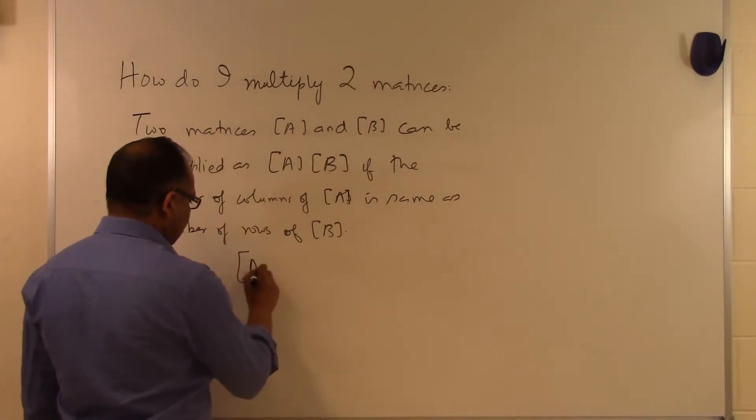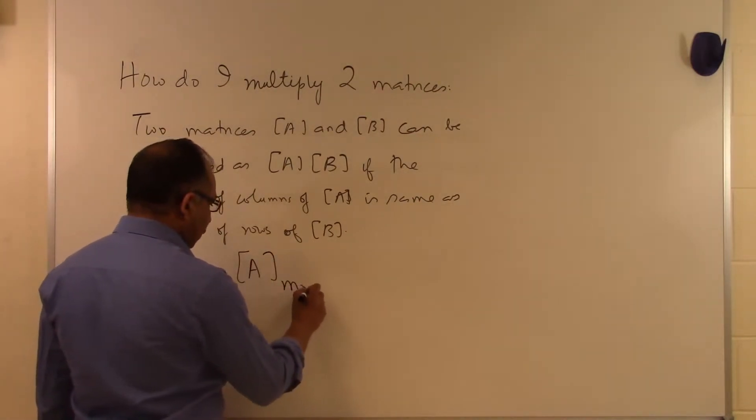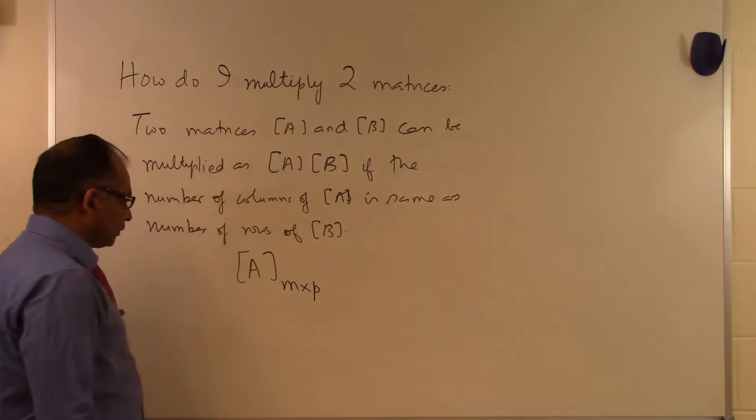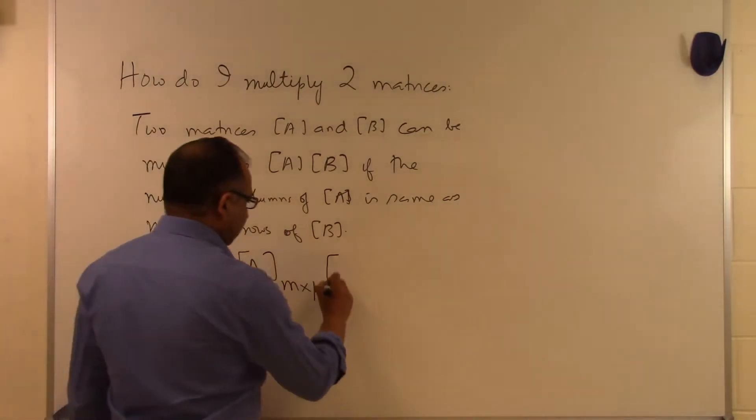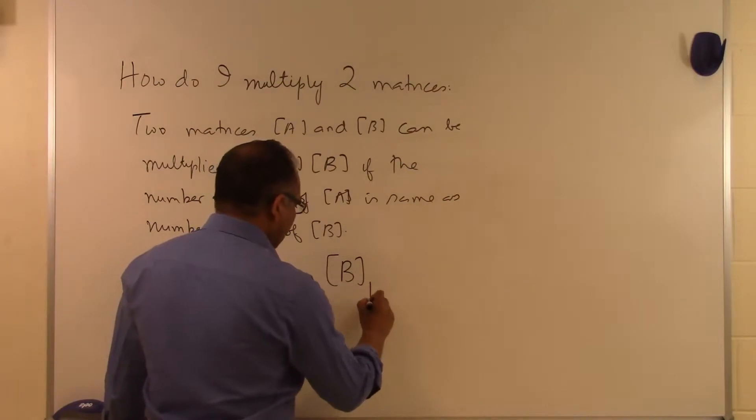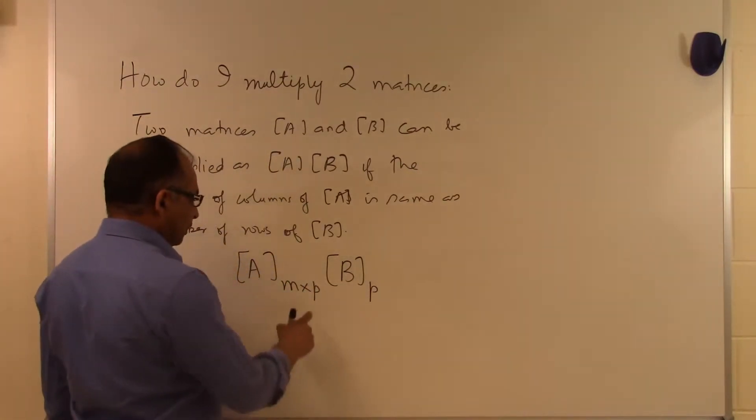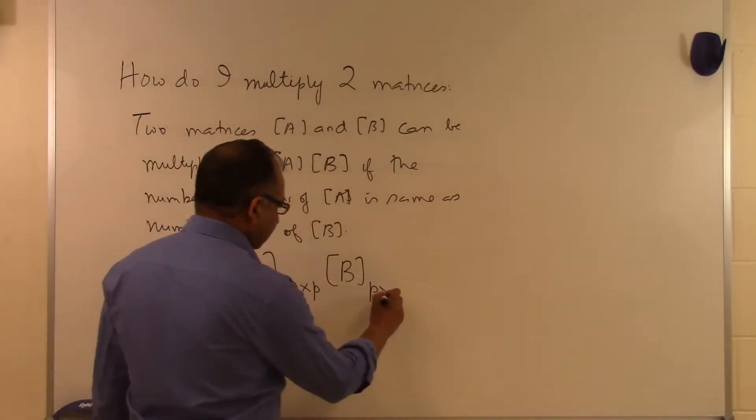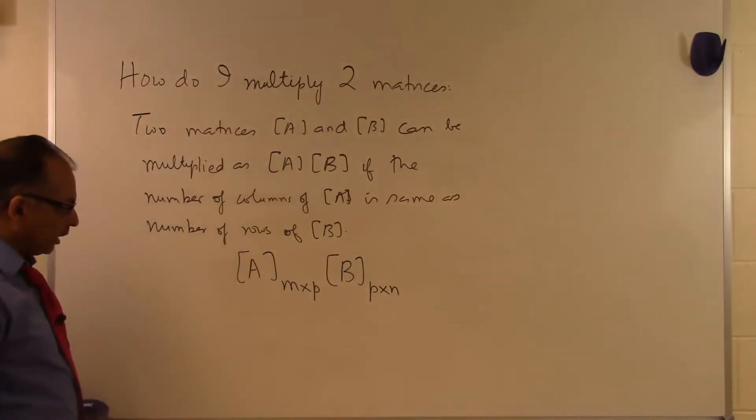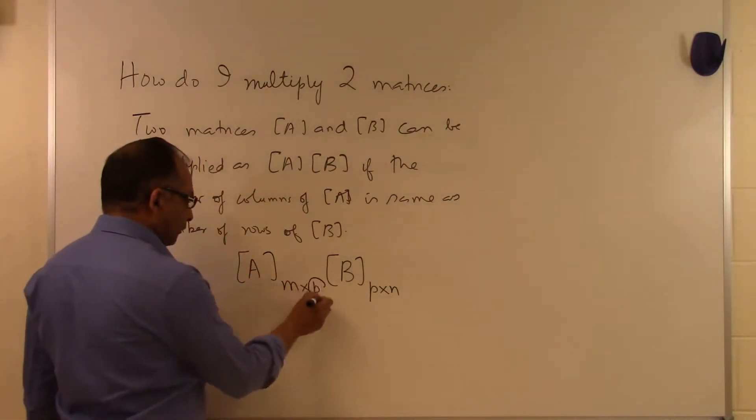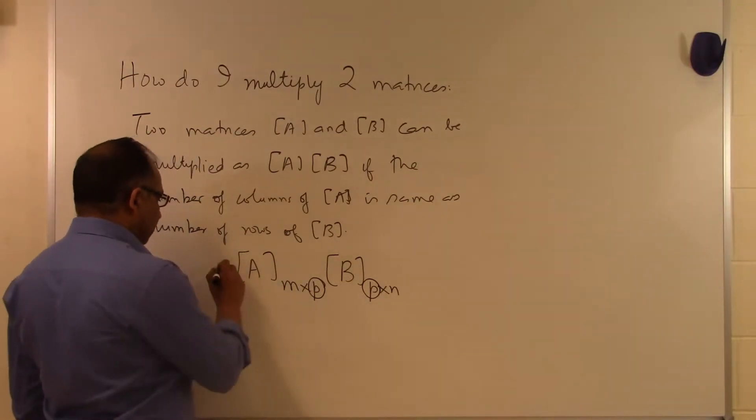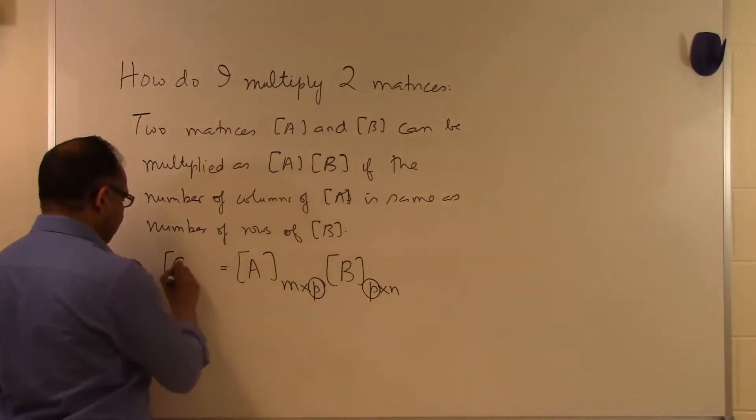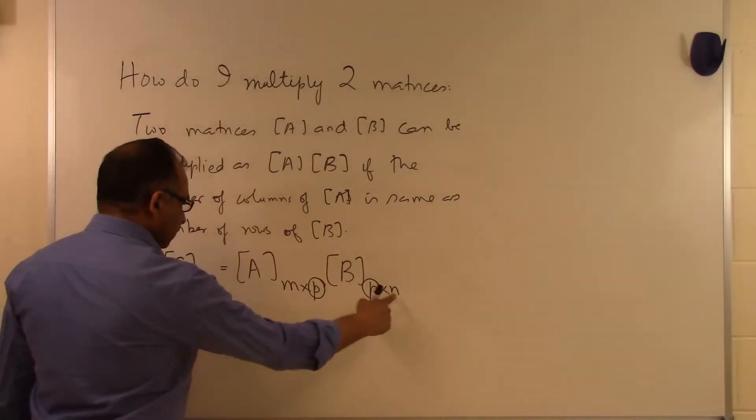Let's see what that means. If I have matrix A with M rows and P columns, and matrix B with P rows and N columns, then the matrix multiplication is defined. The number of columns of A is the same as the number of rows of B. The resulting matrix, which we call C, will have M rows and N columns.